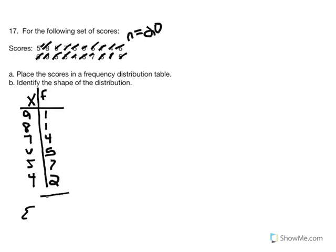The sum of f equals 20, which matches our sample size — all scores are accounted for. Now, part B says identify the shape of the distribution. From Chapter 2, we learned about distributions that are symmetrical, positively skewed, and negatively skewed.